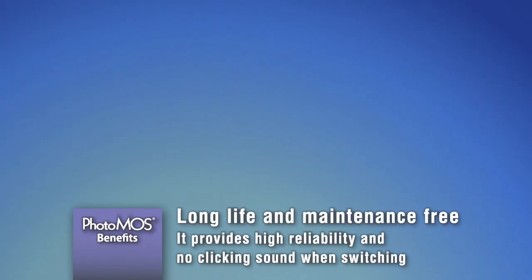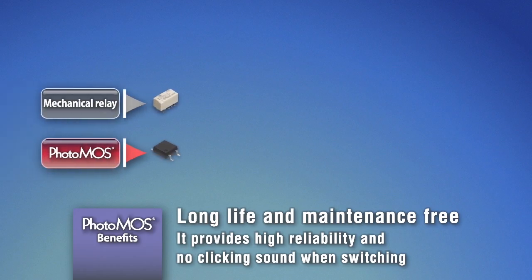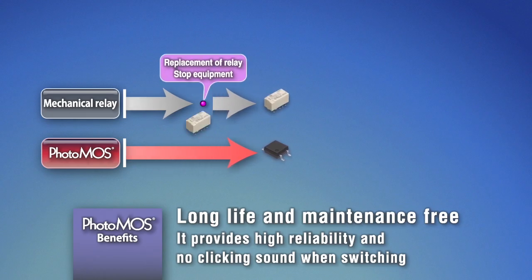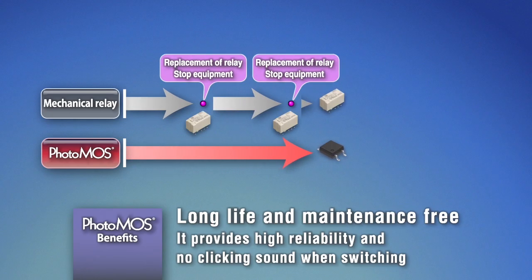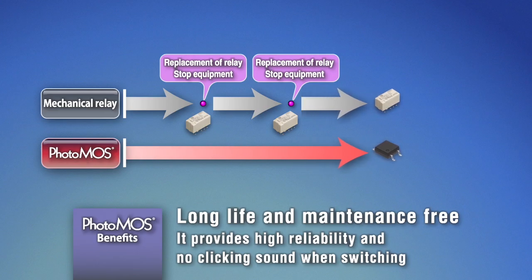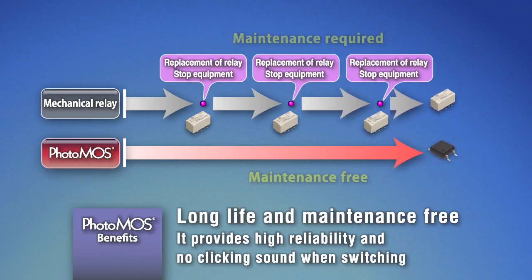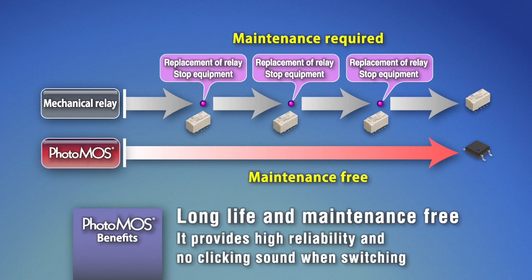Using MOSFET on the output side is a key feature of PhotoMOS. Compared with mechanical relay, it brings big benefits such as maintenance-free and long life. It can reduce the total costs caused by relay replacement, including costs related to stopping the equipment.